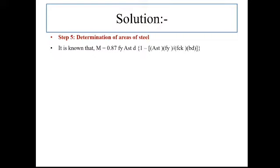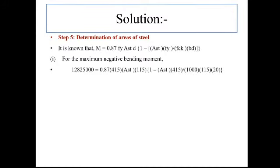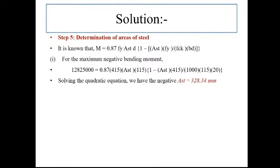For the maximum negative bending moment, we have obtained it as 12.825 × 10⁶ N·mm. Putting all values into the above equation and solving the quadratic equation, we get the negative reinforcement or AST at this support as 328.34 mm².